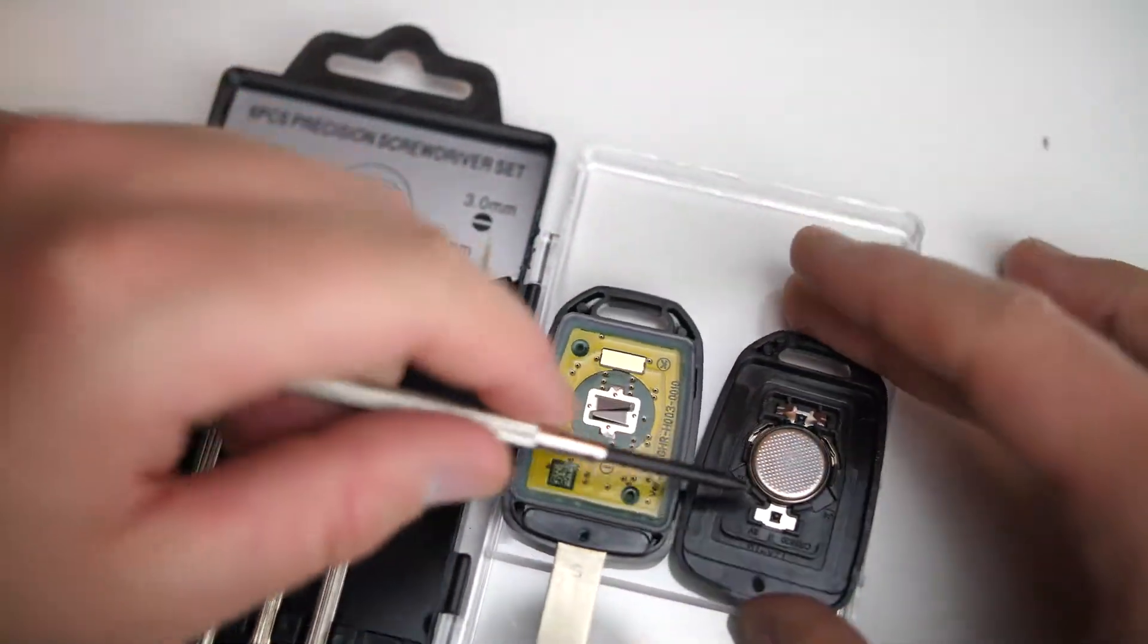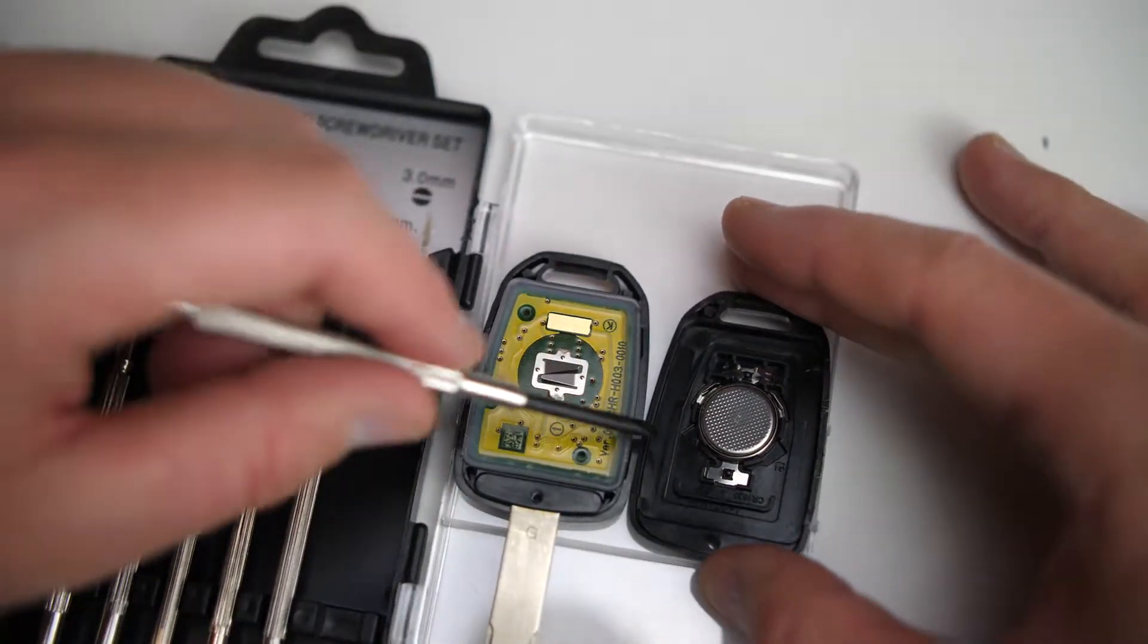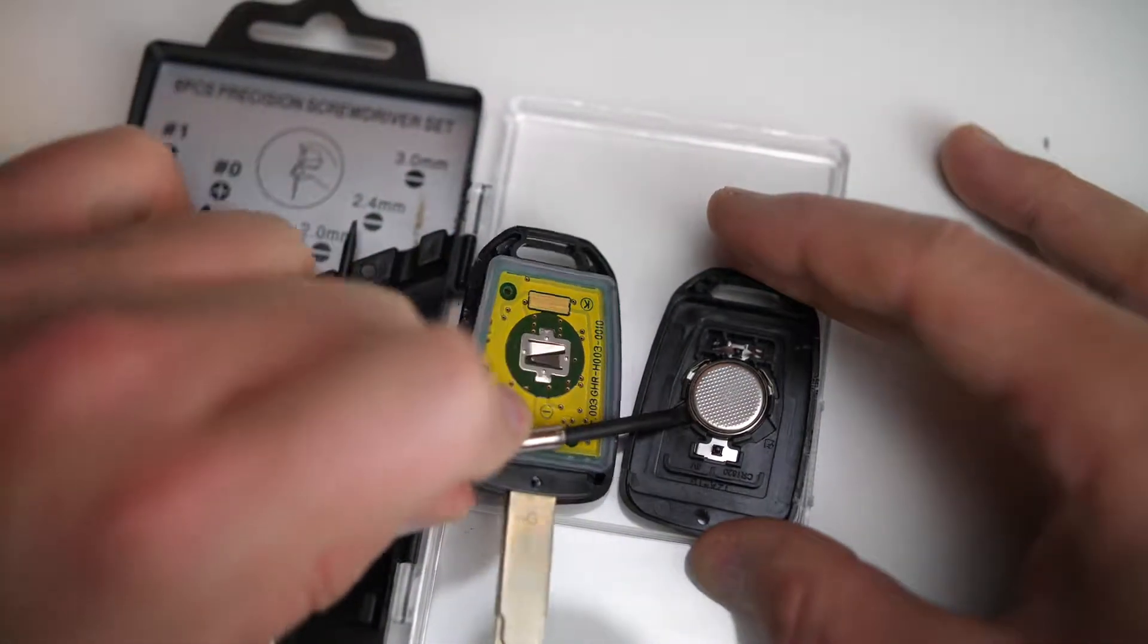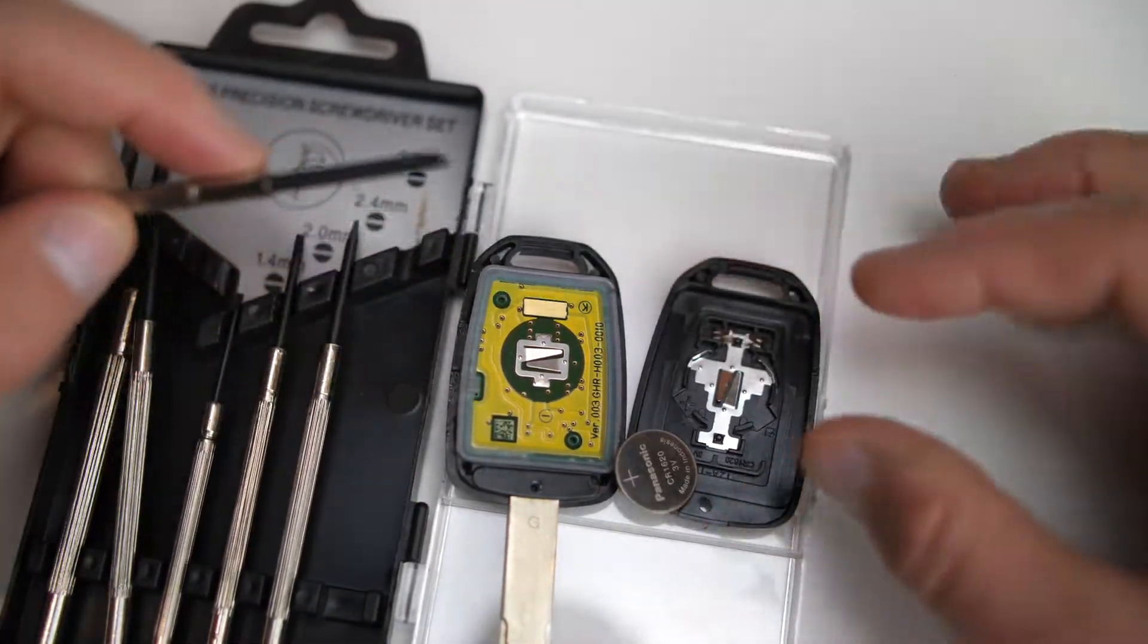Now, once we've got the backing off, you can see we have access to the internal coin battery. Take your flathead and gently get underneath the battery and it will pop right out.